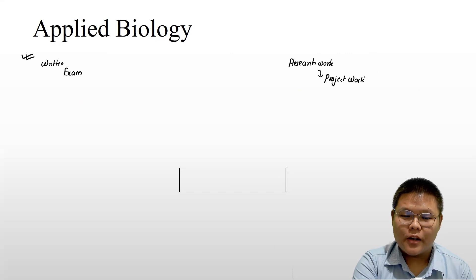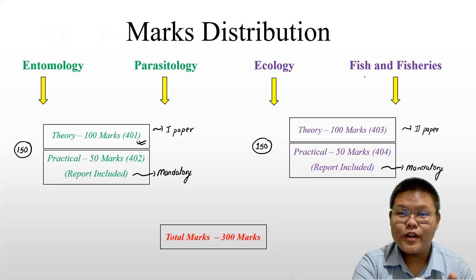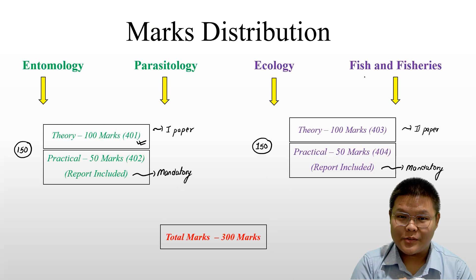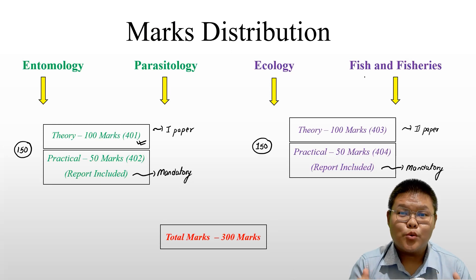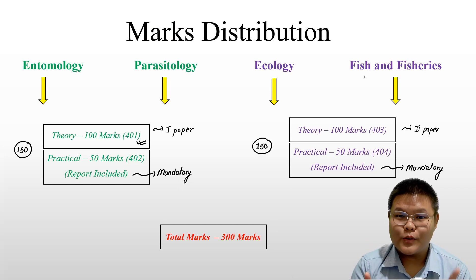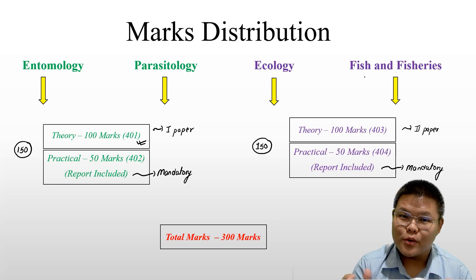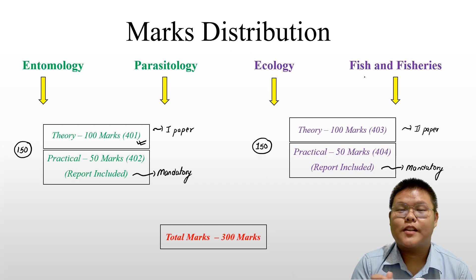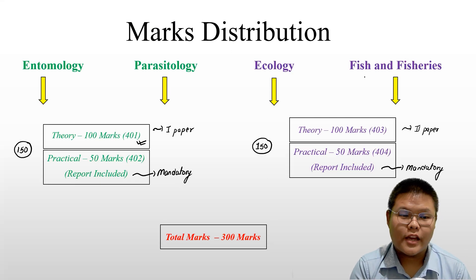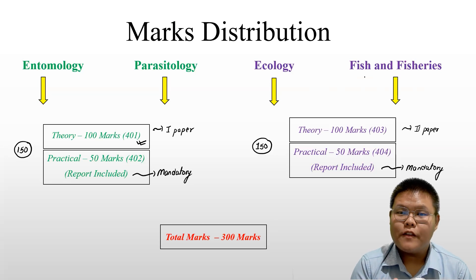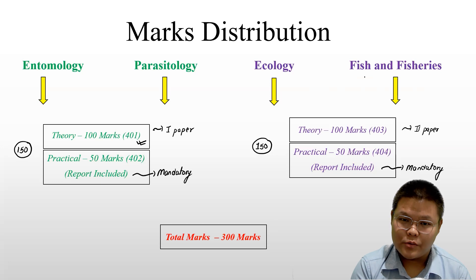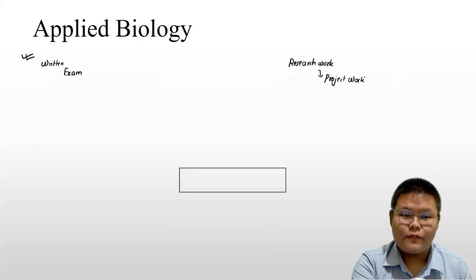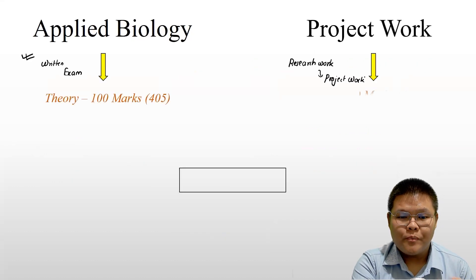So the grand total is: 300 marks for the major subject, plus 100 marks for Applied Biology or Project Work, plus 100 marks for practical components, equals a total of 500 marks overall.